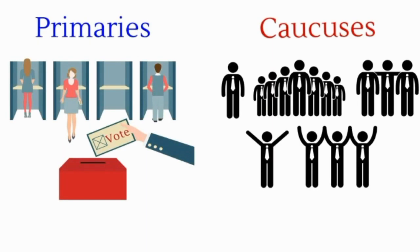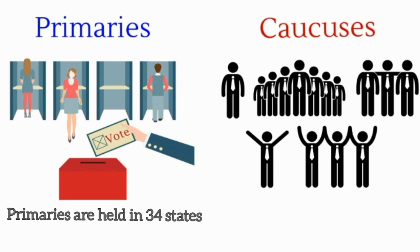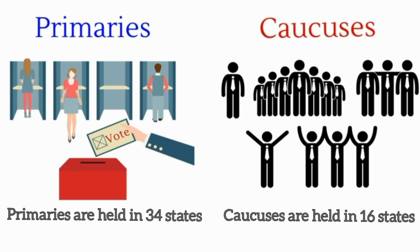In primaries and caucuses, members of the party choose delegates who will then vote and decide the party's final candidate. So primaries and caucuses are party-level elections held in the states of the U.S.A., which usually take place between the months of February to June of election years.